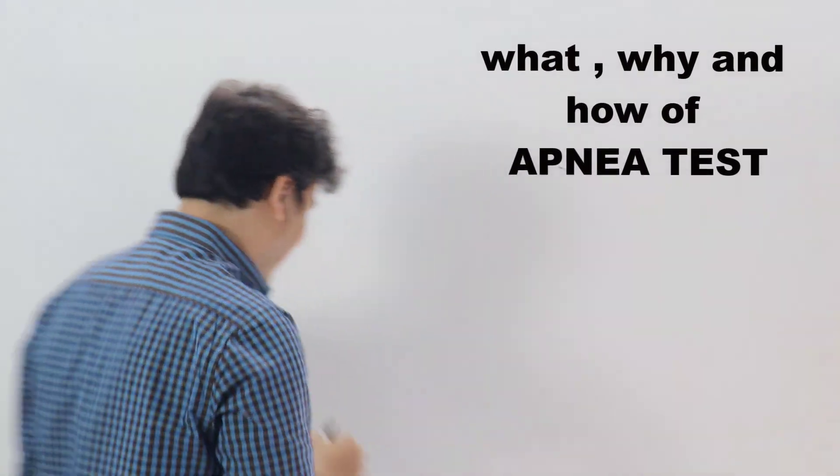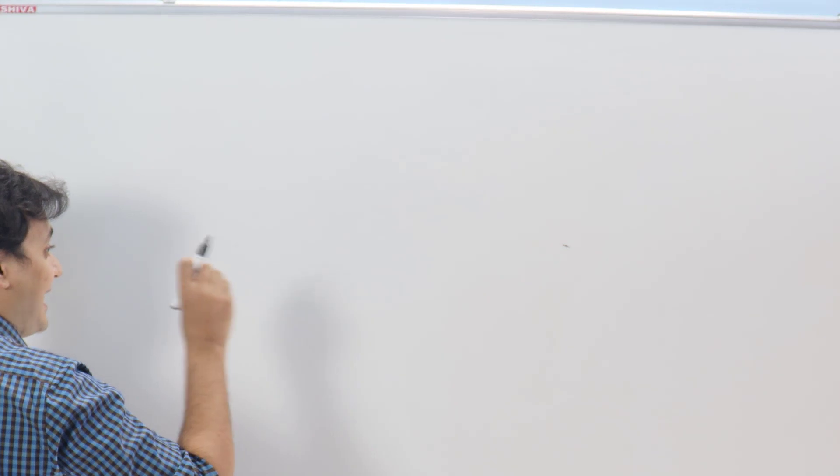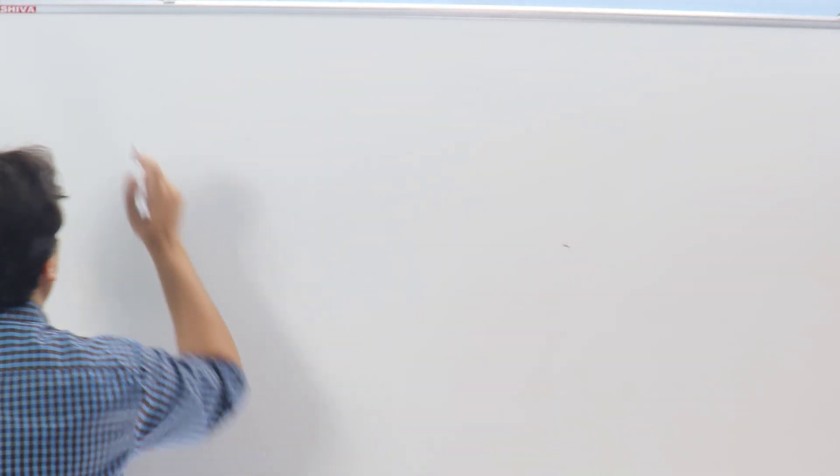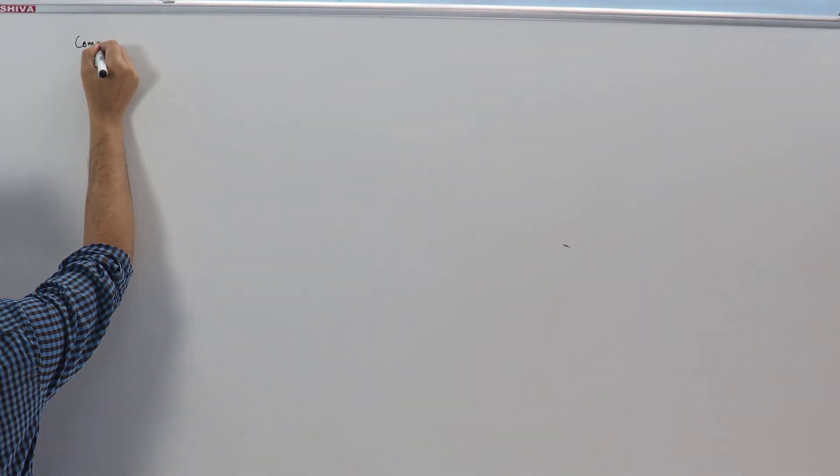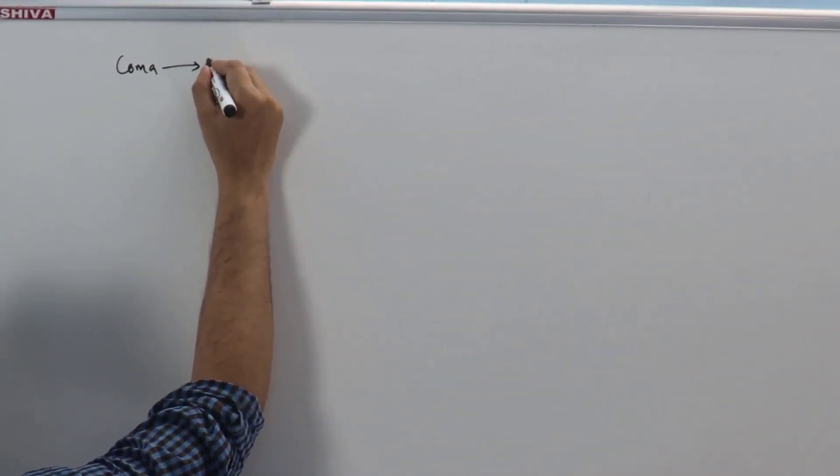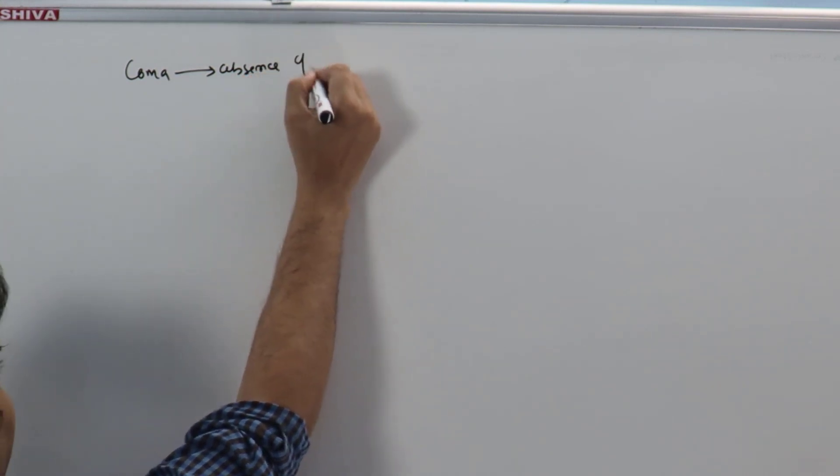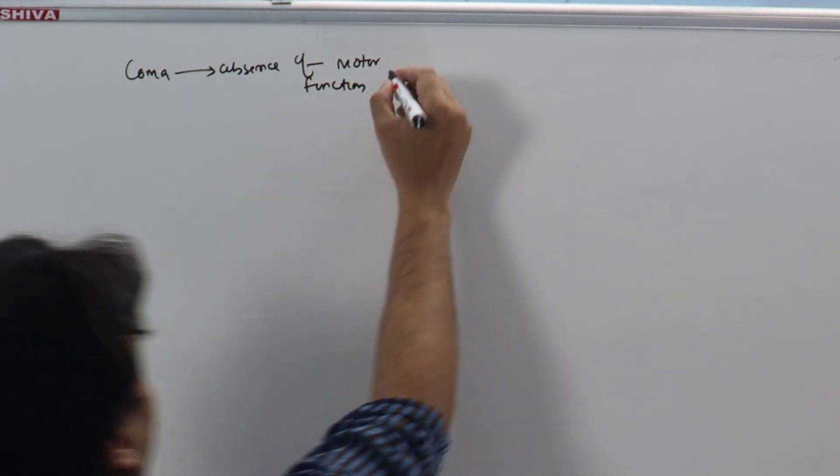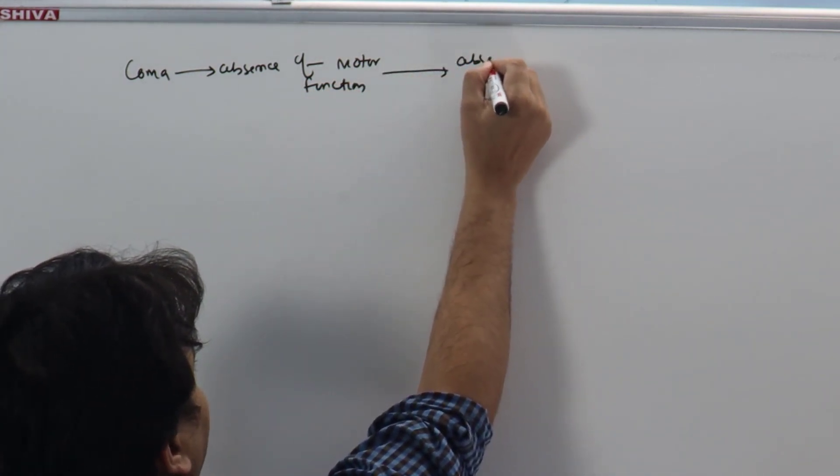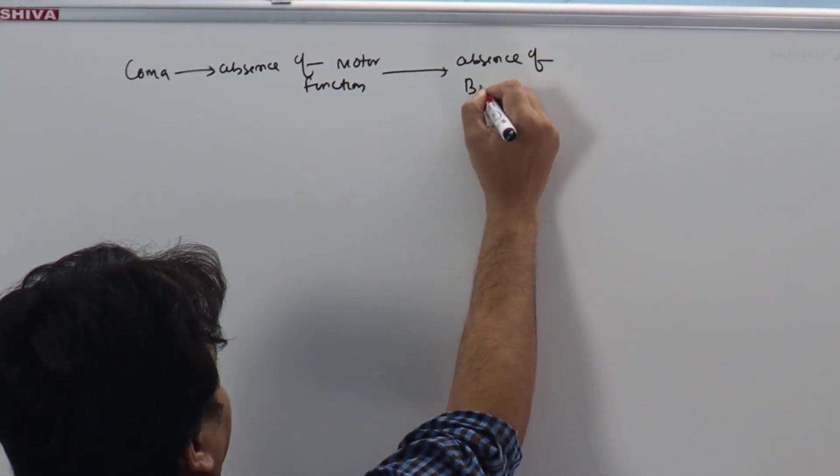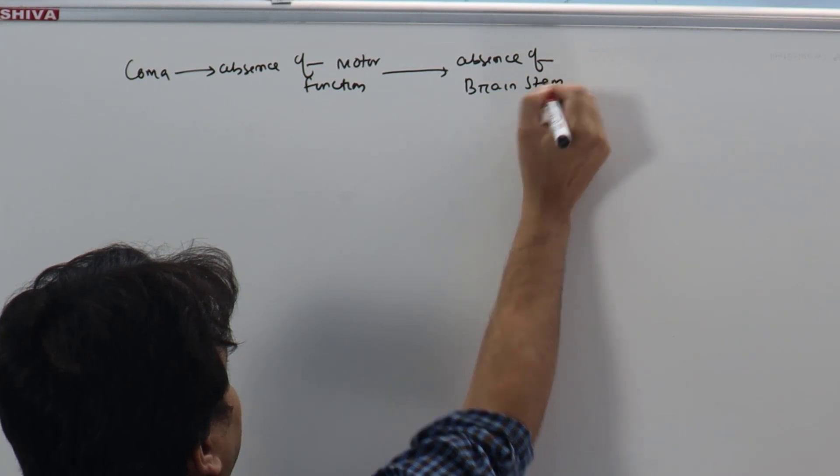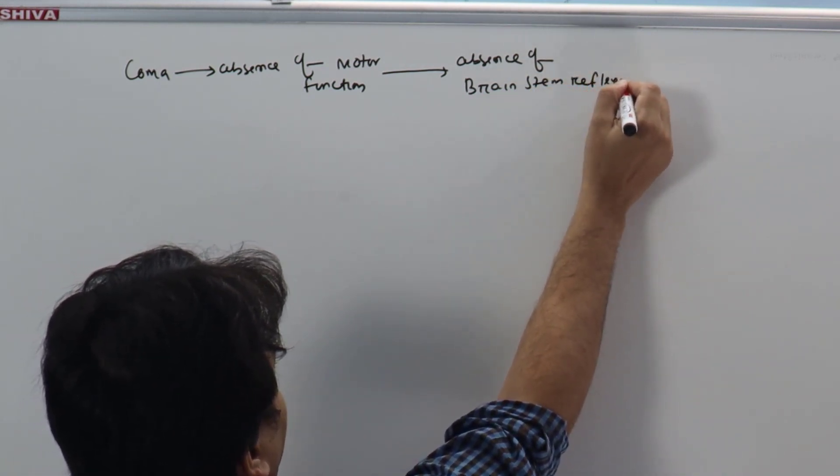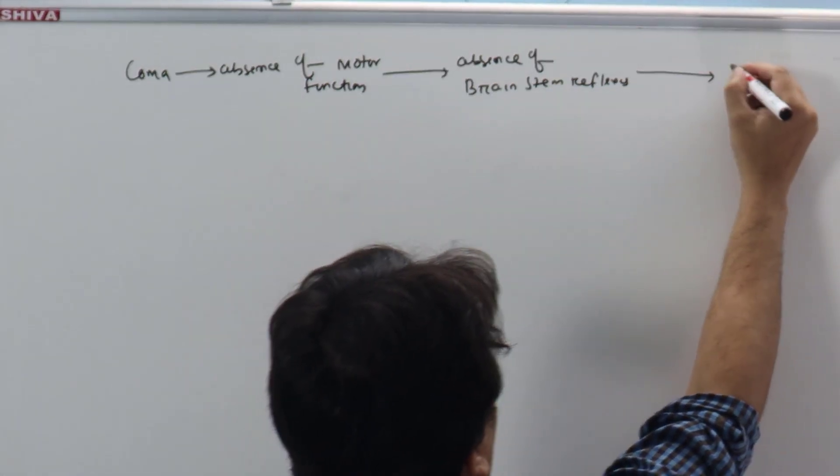Hello everyone, I am Dr. Anupam and today we will discuss the apnea test. In the last class, we discussed how to proceed in diagnosing a patient to be brain dead. First, we have to prove that person is in coma, then absence of motor function, then absence of brain stem reflexes, then absence of respiratory movement.